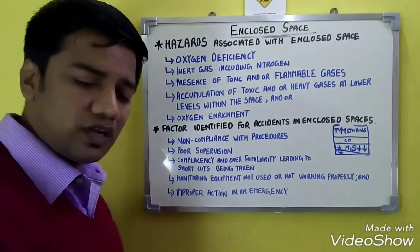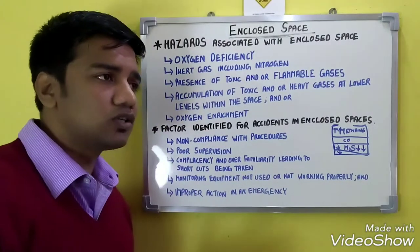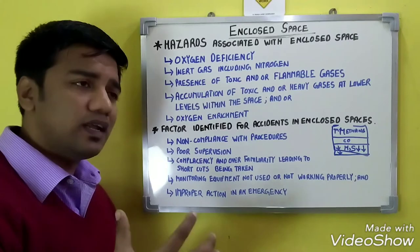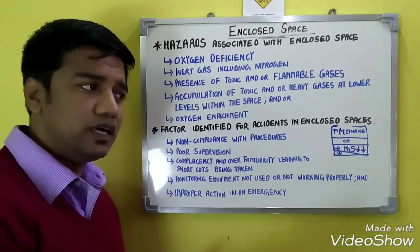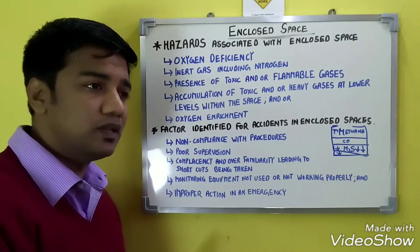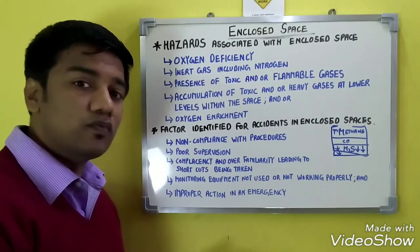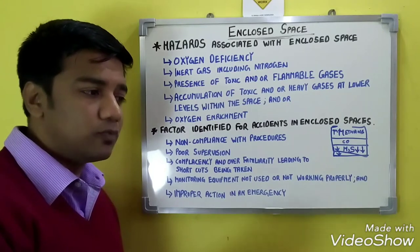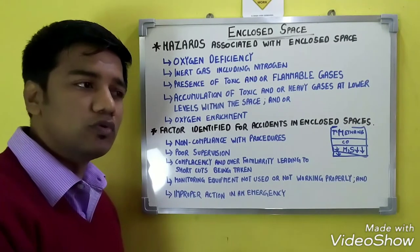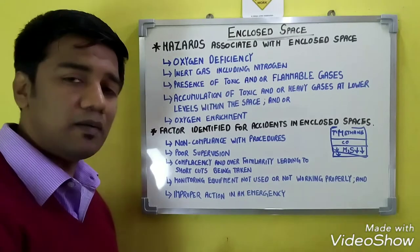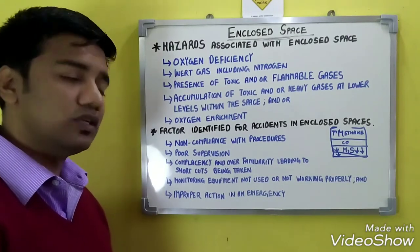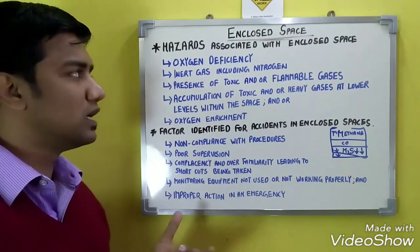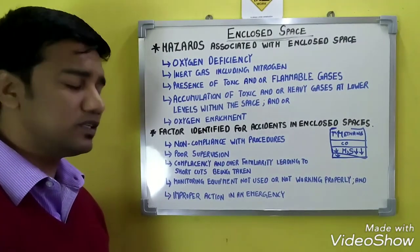Oxygen enrichment is also hazardous. When oxygen exceeds 21% — for example reaching 24% — it may lead to the generation of fire within the compartment. More metals and cargoes are prone to burn or ignite when there is a high level of oxygen present. These are the hazards associated within an enclosed space.